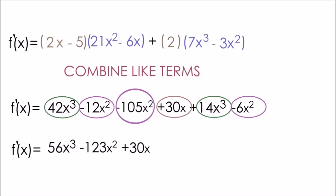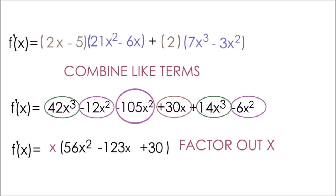And at this point, we're almost finished, but we can still simplify this even further. And notice how all the terms in our derivative have at least one x in common. So we can factor out an x. And inside of the parentheses, each term will have one less x. So we'll have 56x squared minus 123x plus 30. This is the solution and the derivative to our function.